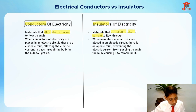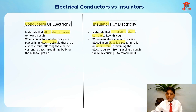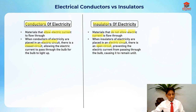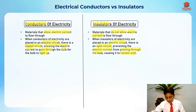An insulator of electricity is a material that does not allow electric current to flow through it. When insulators are placed in an electric circuit, there is an open circuit, which prevents the electric current from passing through the bulb, causing it to remain unlit. When conductors are placed, there's a closed circuit and the bulb lights up.